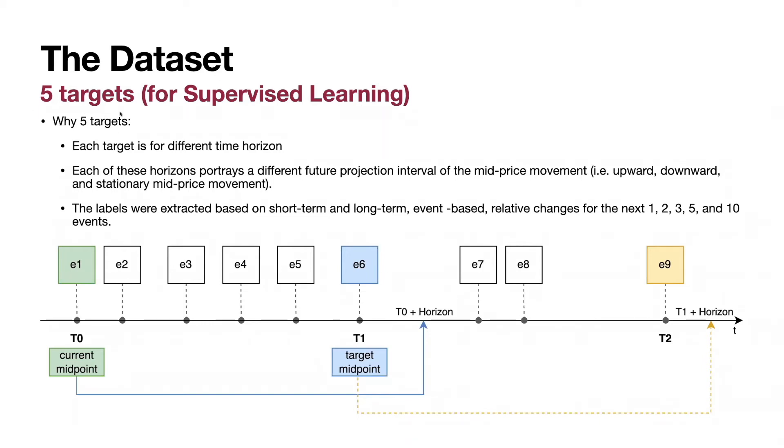To summarize, there are five targets in the dataset for supervised learning. Each target corresponds to a different time horizon. There are closer future midpoints and more distant future midpoints. It means target number one is a midpoint plus one millisecond, target number two is current midpoint plus two milliseconds plus three, five, and ten events or milliseconds.